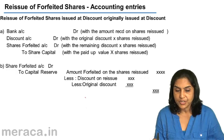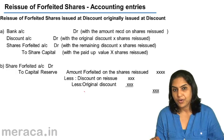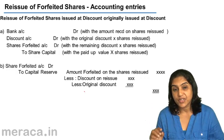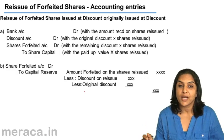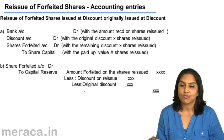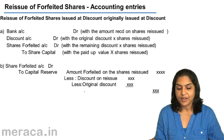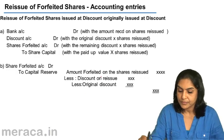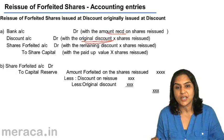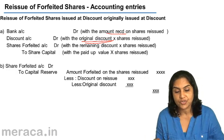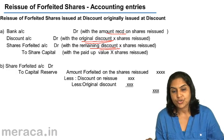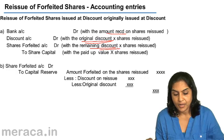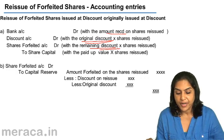There is one more variation. If forfeited shares were originally issued at a discount, and are now being reissued at a discount — that is, the shares were originally issued at a discount, then forfeited, and now reissued again at a discount — the entry would be: Bank account debit with the amount received; Discount account debit with the original discount on the shares reissued; Shares Forfeited account debit with the remaining discount; to Share Capital. And again, Shares Forfeited account debit to Capital Reserve.